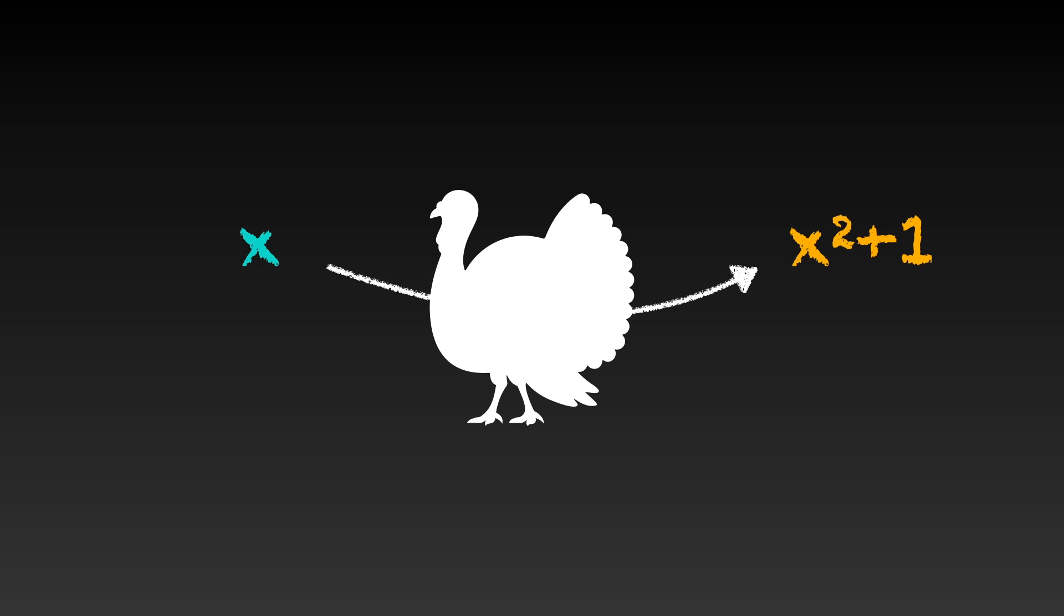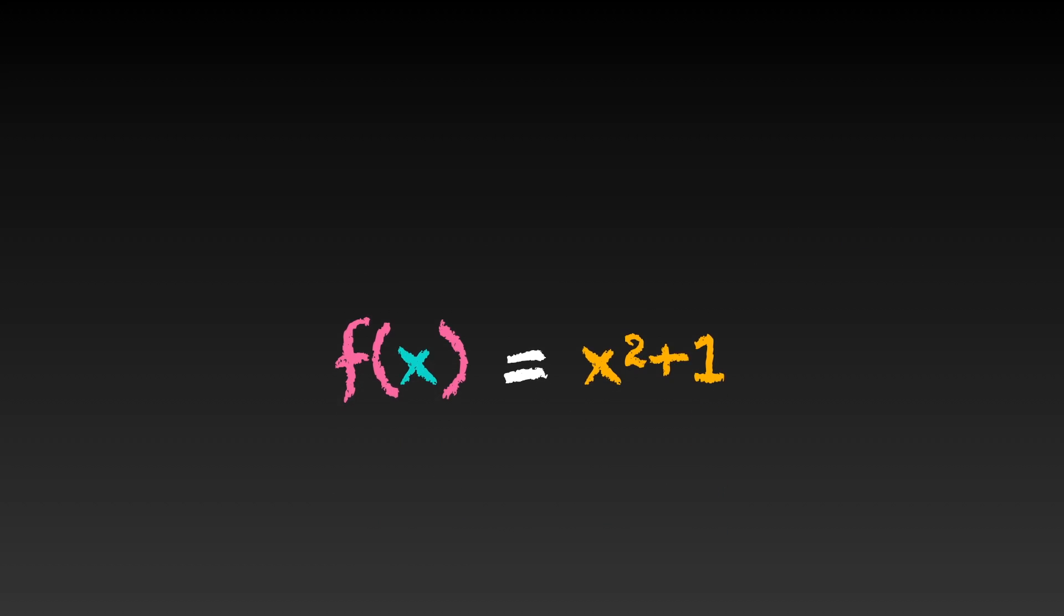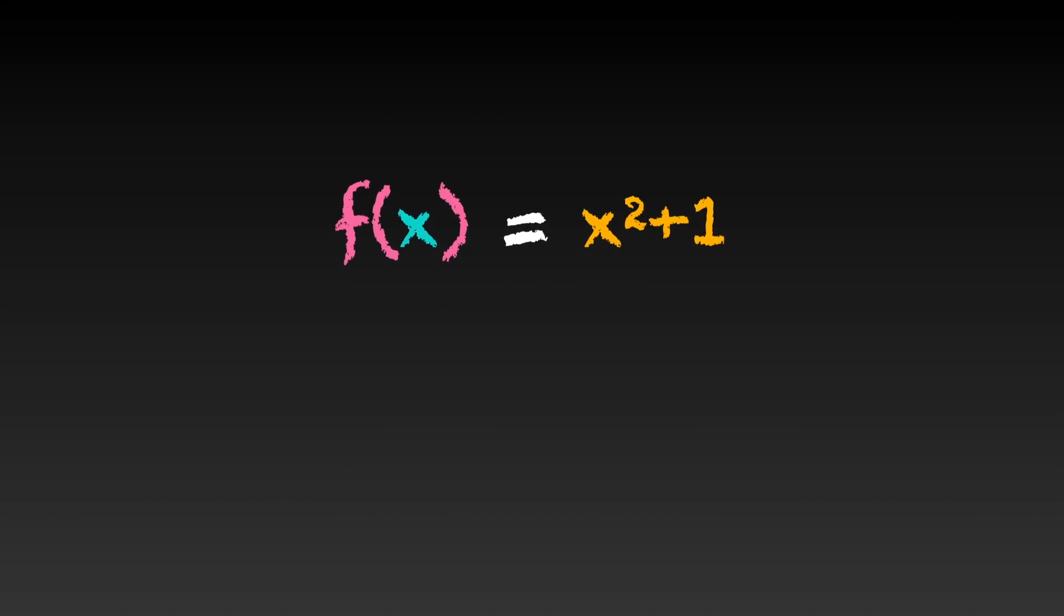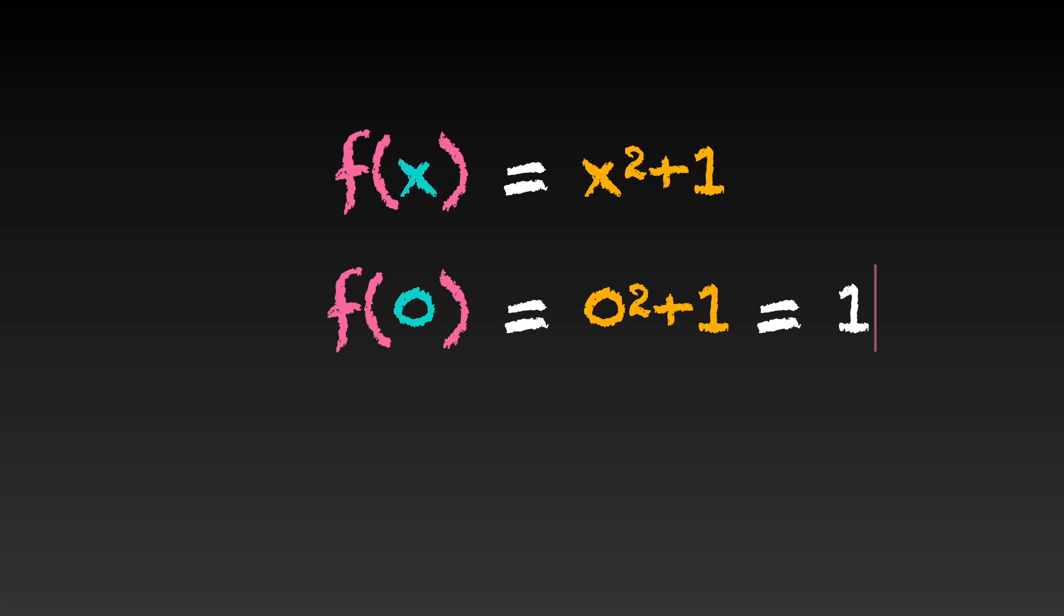If we have function here, we will use the function notation to write as f of x equals x squared plus 1. We can substitute different values of x. For example, f of 0 equals 0 squared plus 1 equals 1. f of 4 equals 4 squared plus 1 equals 17.